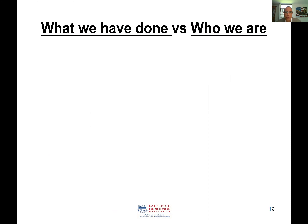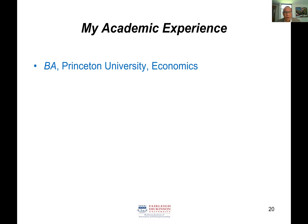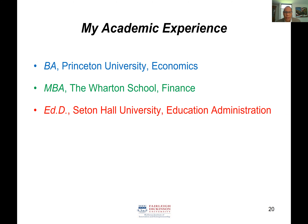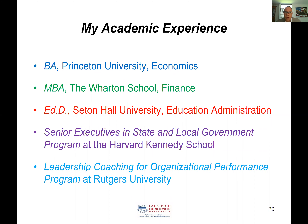Now I want to get into introductions. We've all seen icebergs and know that most of the iceberg is below the waterline. I call this the cultural iceberg — to talk about things we can see, because we often define ourselves by visible things, yet those aren't really who we are. My academic experience: I got a BA in economics from Princeton, an MBA in finance from Wharton, a doctorate in education administration from Seton Hall, and completed programs at the Harvard Kennedy School and Rutgers University. That's above the iceberg — but that's not really who I am.